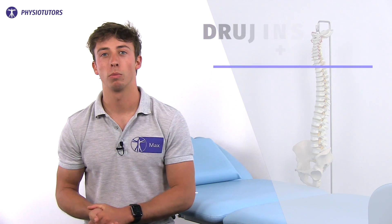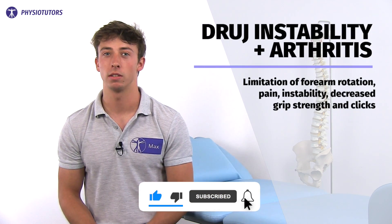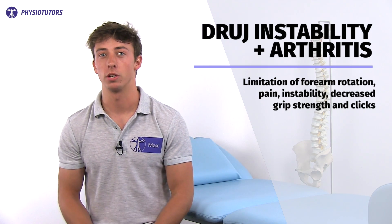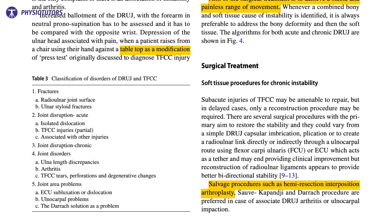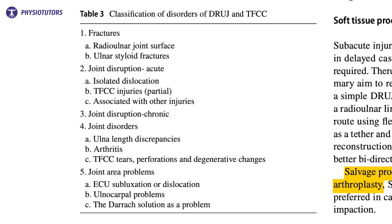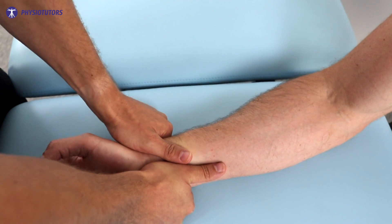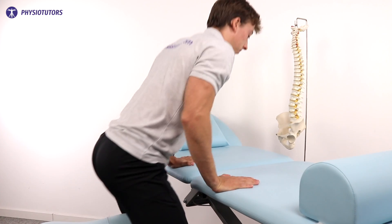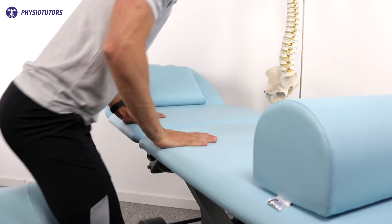Limitations of forearm rotation, pain, instability, decreased grip strength and clicks should lead clinical suspicion towards DRUJ injury or pathology causing ulnar-sided wrist pain. This can be traumatic or inflammatory. A table of different disorders can be seen here — pause the video to have a more thorough look. One can test the side-to-side joint play to reject or accept an instability hypothesis. Another useful test for instability is pressing the table when standing up, as a modification of the press test for the TFCC.